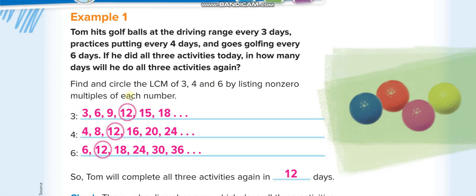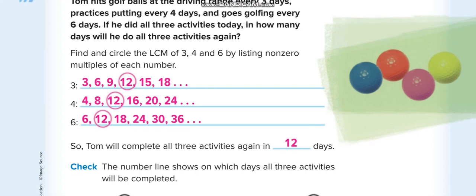We use the term LCM for least common multiple. For the multiples, you write: 3 times 1 is 3, 3 times 2 is 6, 3 times 3 is 9, and so on. You write all the multiples until you find a common one — that is the least common multiple.